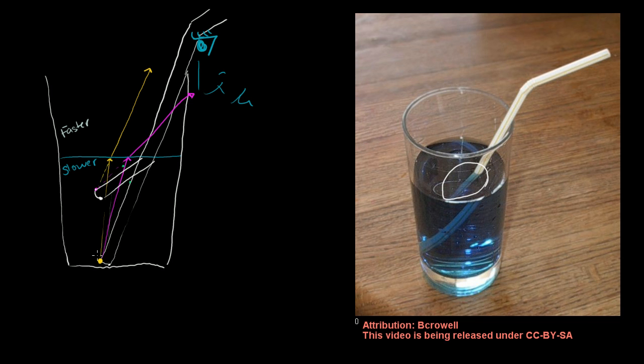So to this observer, this point on the straw will look to be right over here, even though the light was emitted down here. And that's why the straw actually looks bent. So this is all really just because of refraction, from going from a slower medium to a faster one. So hopefully you find that a little bit interesting. In the next video, we'll actually do some examples with Snell's Law just to get ourselves comfortable with the mathematics.